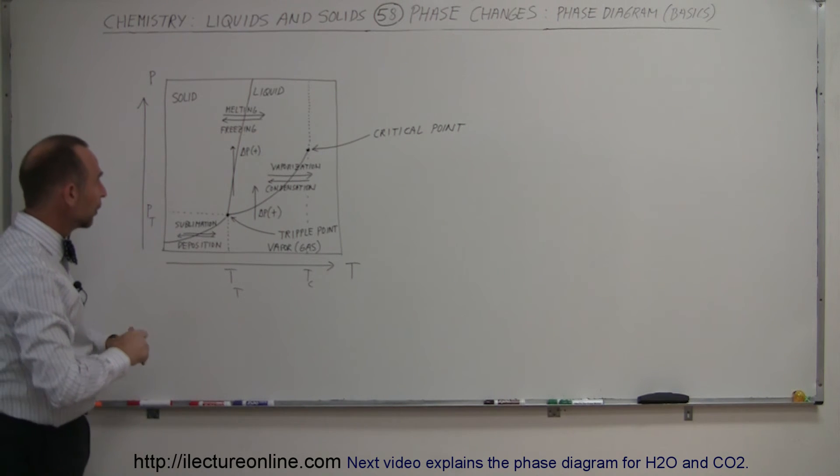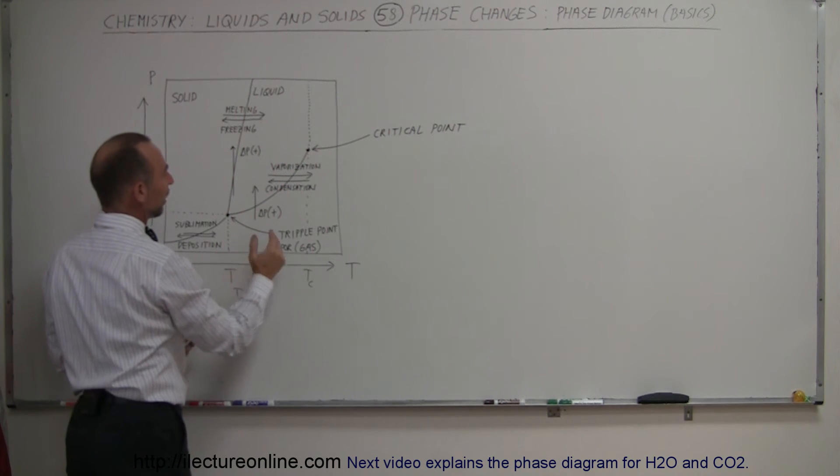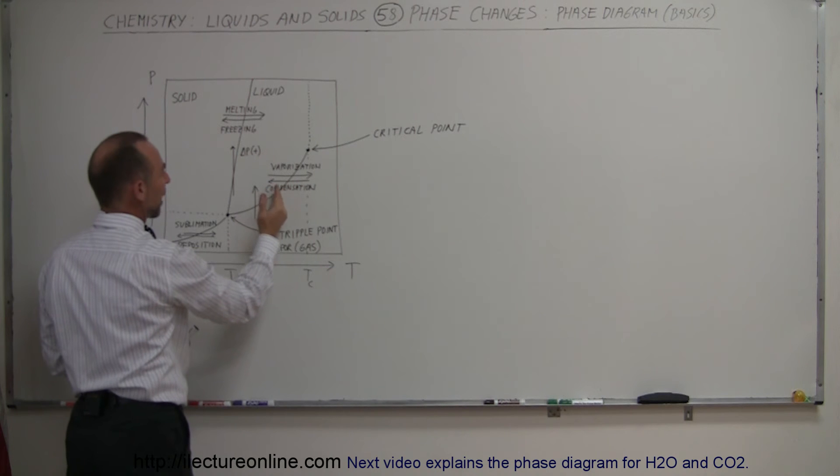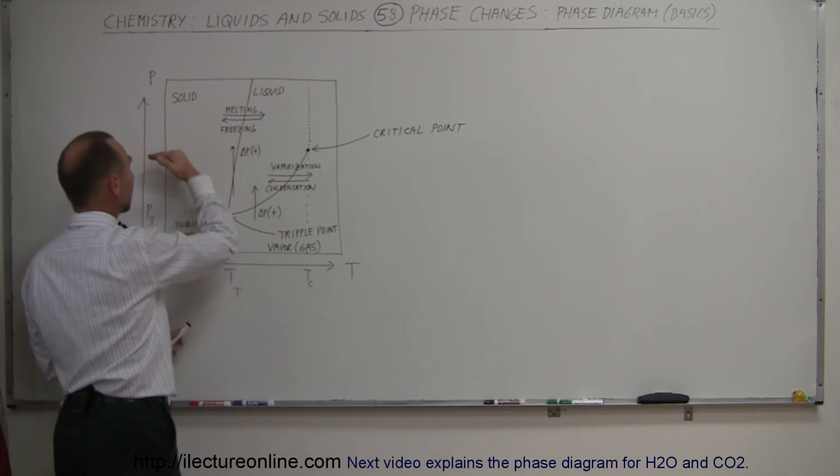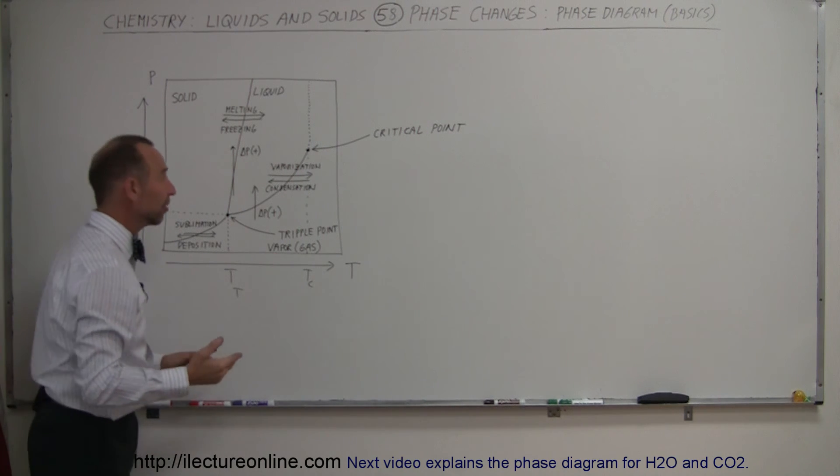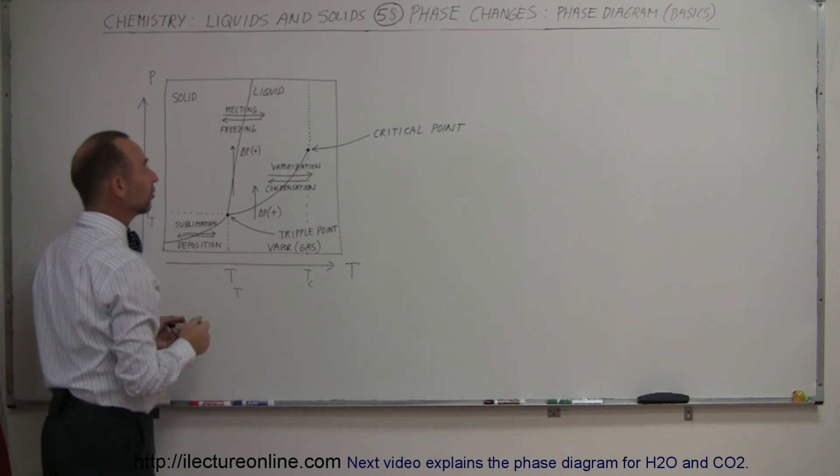So now, going over to the change between liquid and vapor. Notice that at a particular temperature, if the temperature drops below a certain amount, it goes from a vapor phase to a liquid phase. And again, it depends on the pressure. The higher the pressure, the greater the temperature at which the vapor can exist. The lower the pressure, the lower the temperature at which the vapor can exist.